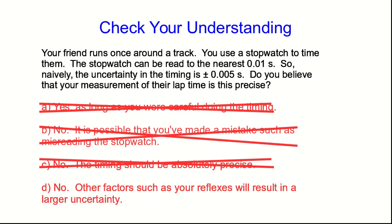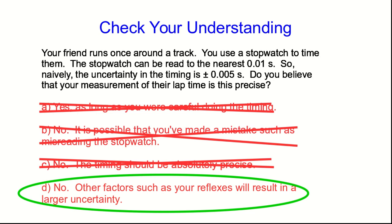If one of your measurements is very different from all the rest, chances are you made a mistake and you should discard that measurement. So it's D. There are going to be other things, in this case your reflexes, which will result in a larger uncertainty than is possible with the stopwatch. Your reflexes probably introduce an uncertainty in this measurement of several tenths of a second.